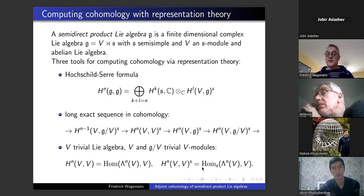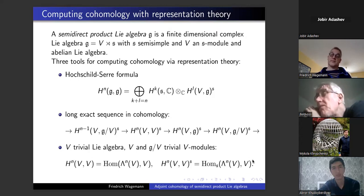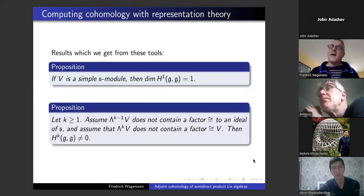For the trivial Lie algebras these cohomology spaces reduce to cochain spaces: the n-th cohomology of v with values in v is just linear maps from the n-th exterior product of v with values in v. Taking the s-invariants gives s-equivariant maps, and this is where representation theory comes in — you need to know the exterior products of your module as an s-module and whether v or g over v appear in the decomposition into irreducibles.